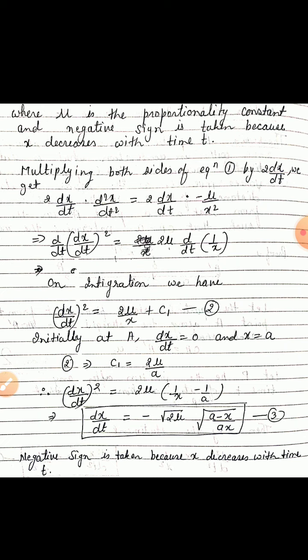Initially at A, dx/dt equals 0 because the particle starts from rest, so its velocity is 0, and x equals a. Substituting these values in equation 2, we get c₁ = 2μ/a. Substituting the value of c₁ back into equation 2, (dx/dt)² = 2μ(1/x − 1/a), so dx/dt = −√(2μ) · √((a−x)/ax), give it as equation 3. The negative sign is taken because x decreases with time t.